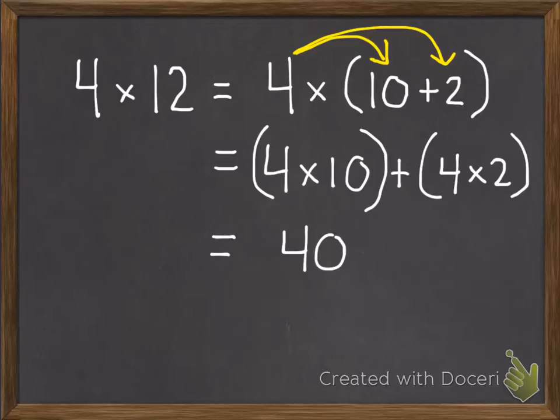Then, 4 times 10 equals 40, plus 4 times 2, which equaled 8. We add those together and we get 48.